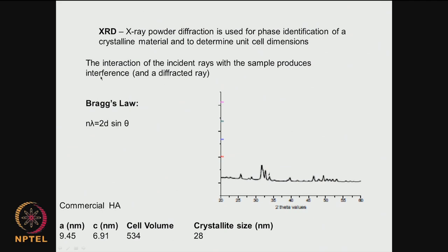The interaction of the incident X-rays with the sample produces an interference — the diffracted ray is observed and the various crystalline phases are seen in that diffracted ray. If you remember from school physics, Bragg's law states: nλ = 2d·sinθ, where n is typically 1, λ is the wavelength, d is the dimension of the crystal, and θ is the diffraction angle. From this formula we can calculate d.